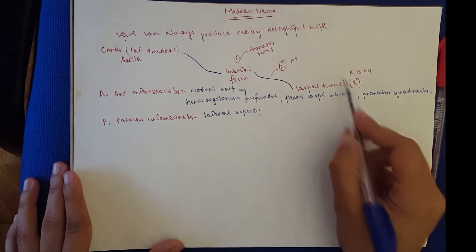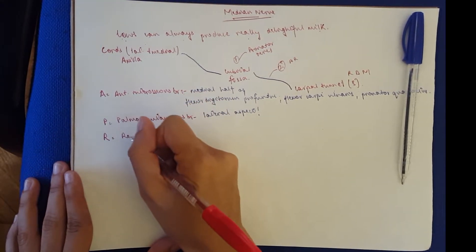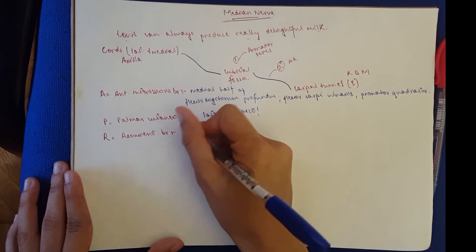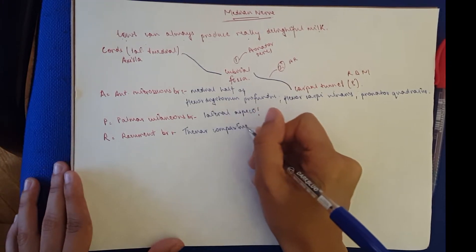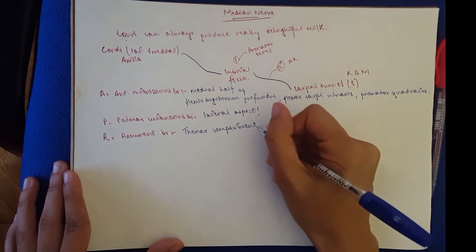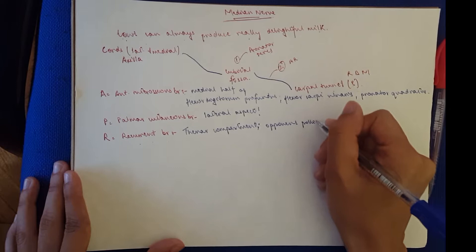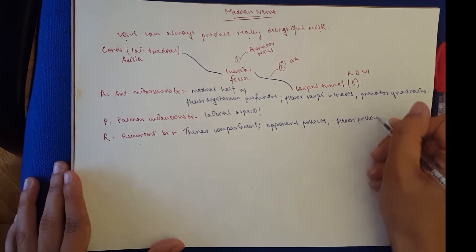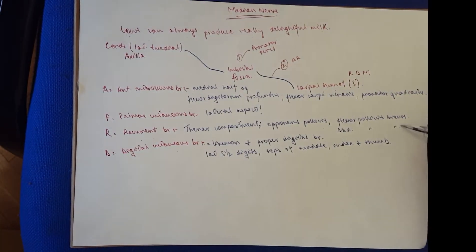Then we move on to our three branches of the carpal tunnel. We have R, which is the recurrent branch. It supplies the thenar compartment and also supplies the pollicis muscles. You have the opponens pollicis, the abductor pollicis brevis, and the flexor pollicis brevis.